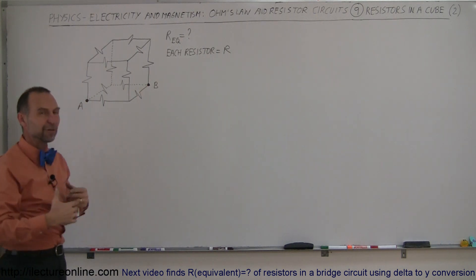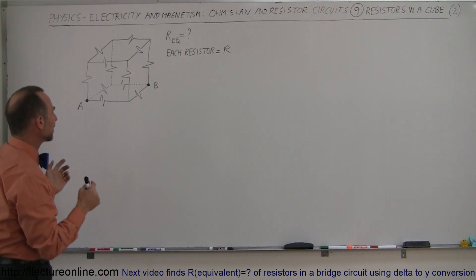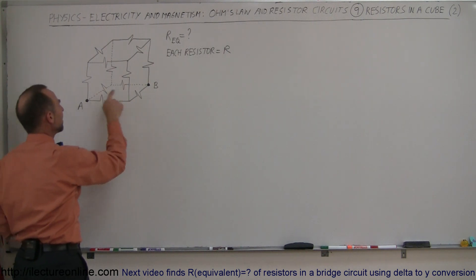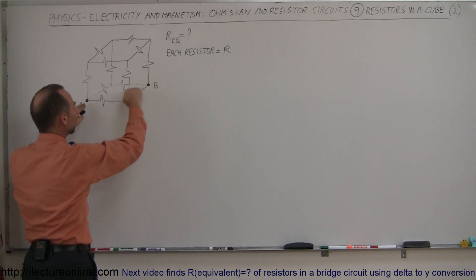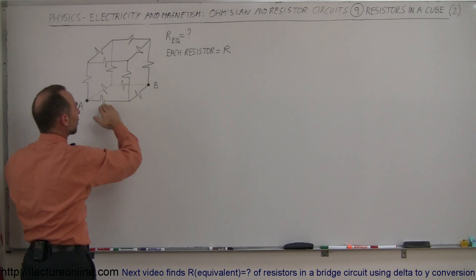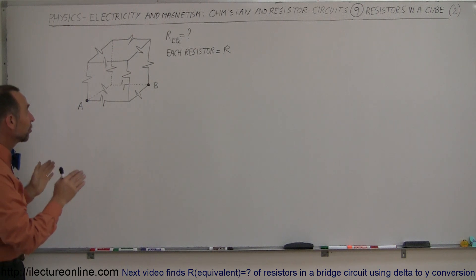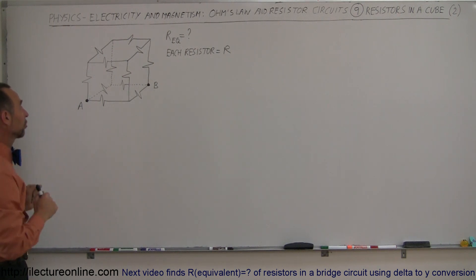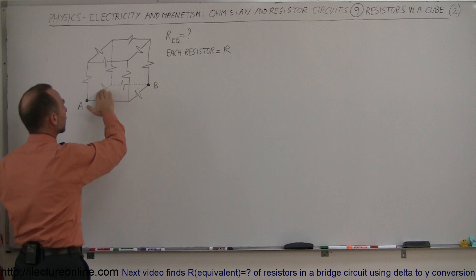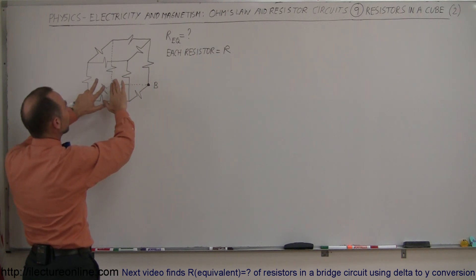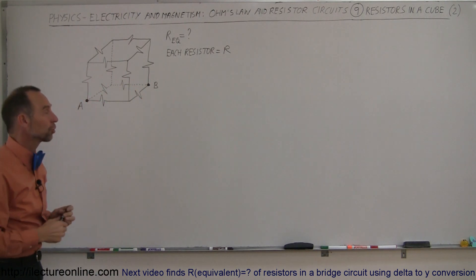Same initial setup, but a very different approach. How do you find the equivalent resistance between A and B, when A and B are across the corner, just on the bottom part of the cube? It all comes down to finding a way to redraw this circuit. We're going to draw the bottom of the circuit first, and turn this into a two-dimensional problem instead of a three-dimensional cube.